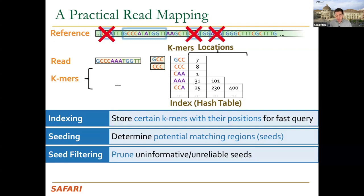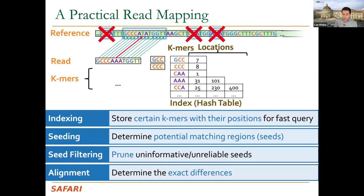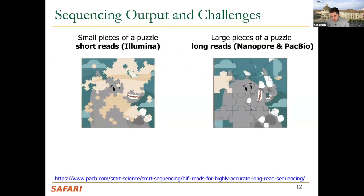In the third step, we apply filtering algorithms — such as frequency filters or chaining to identify chains of seed matches — to reduce the number of candidate regions. In the fourth step, with fewer candidate regions remaining, we perform alignment using approximate string matching with dynamic programming, which identifies insertions, deletions, and substitutions between a read and the reference genome to determine true similarity.